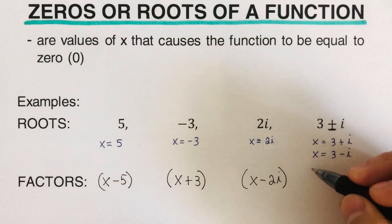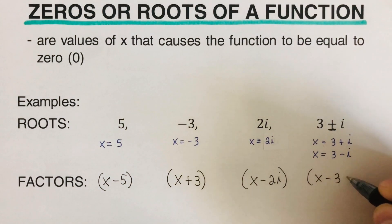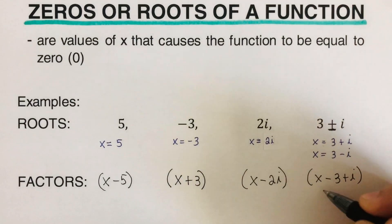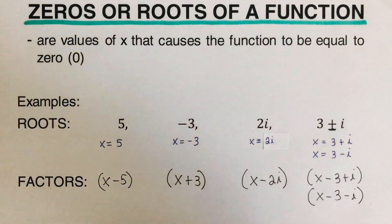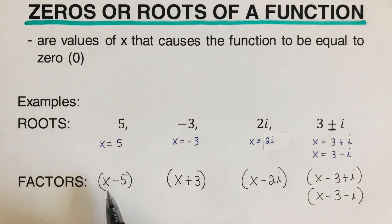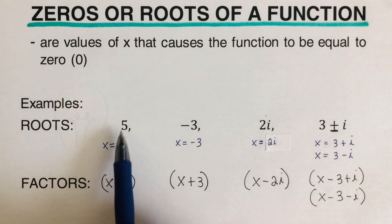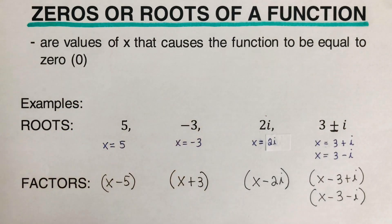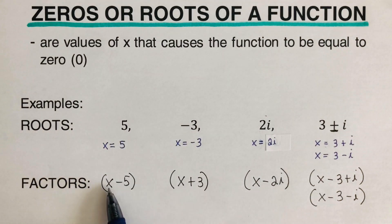The root x = 3 + i in factored form is (x − (3 + i)), and x = 3 − i becomes (x − (3 − i)). So the trick is: given any root, switch its sign, place it next to x, and write the binomial in parentheses.